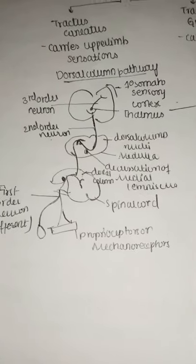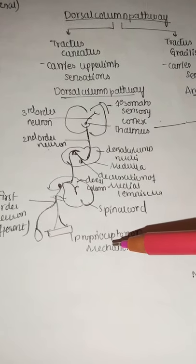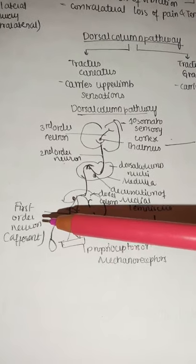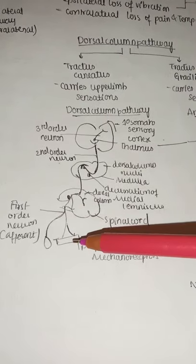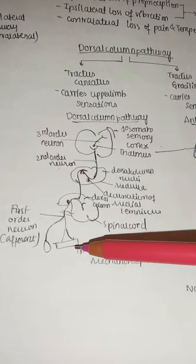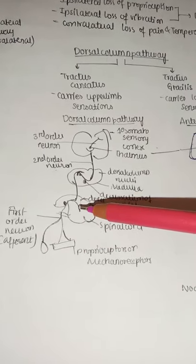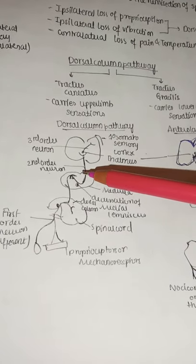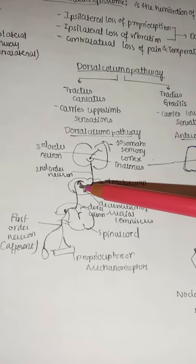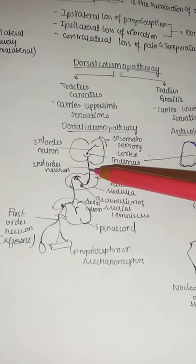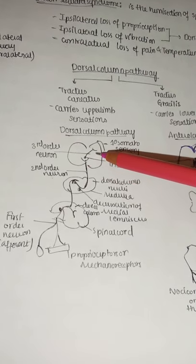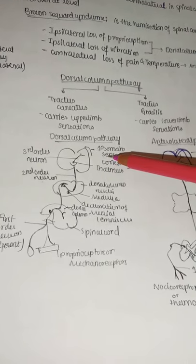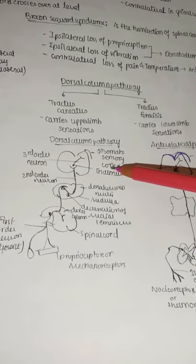In the dorsal column pathway, proprioceptors and mechanoreceptors send information via first-order afferent neurons ascending ipsilaterally in the spinal cord. At the medulla, the pathway crosses to the opposite side via second-order neurons heading to the thalamus. From the thalamus, third-order neurons go to the primary somatosensory cortex.